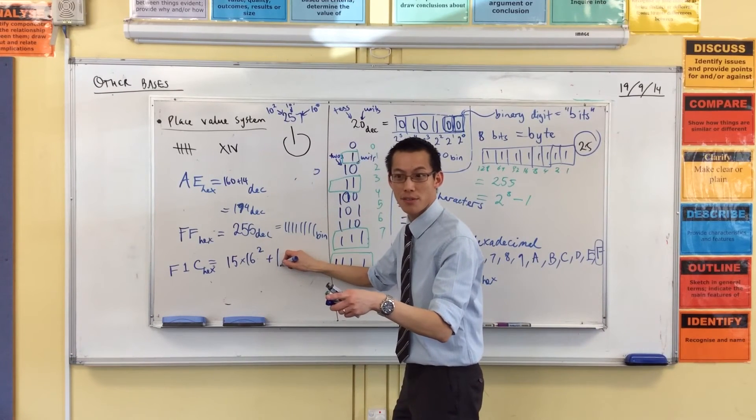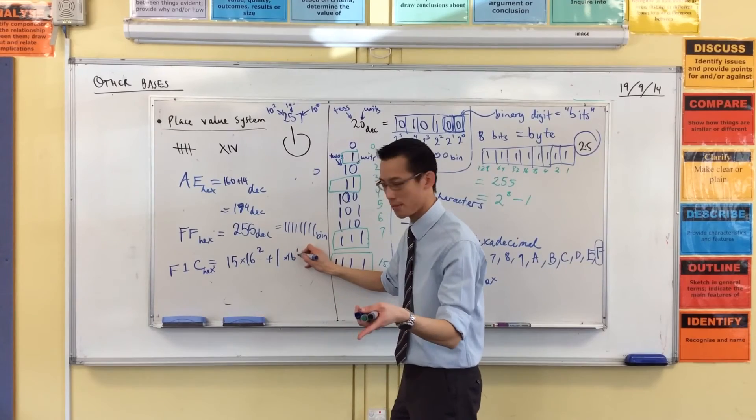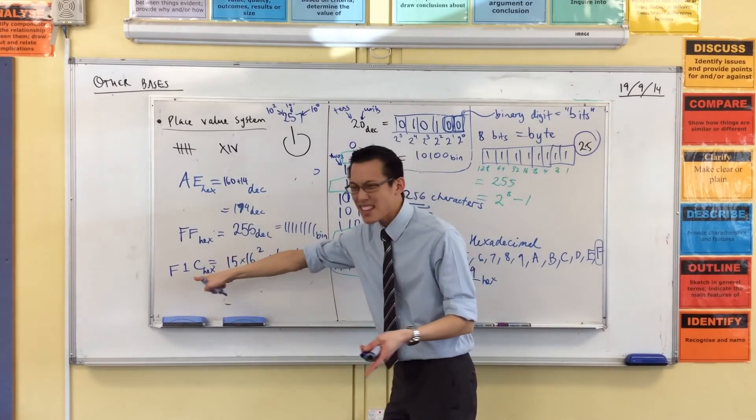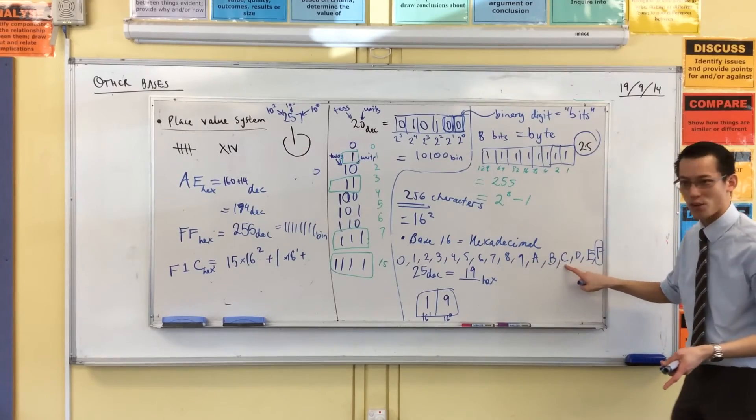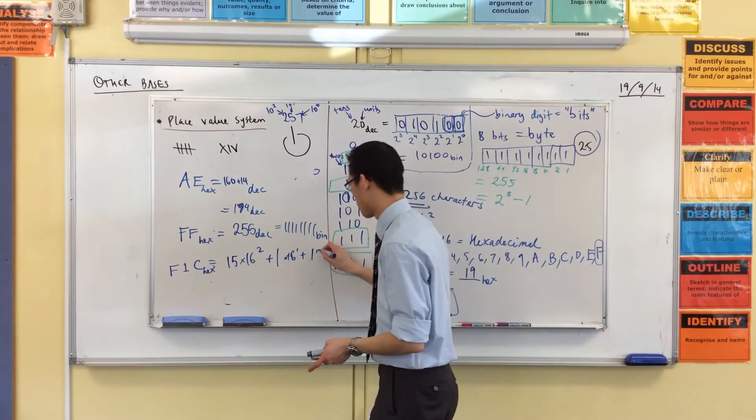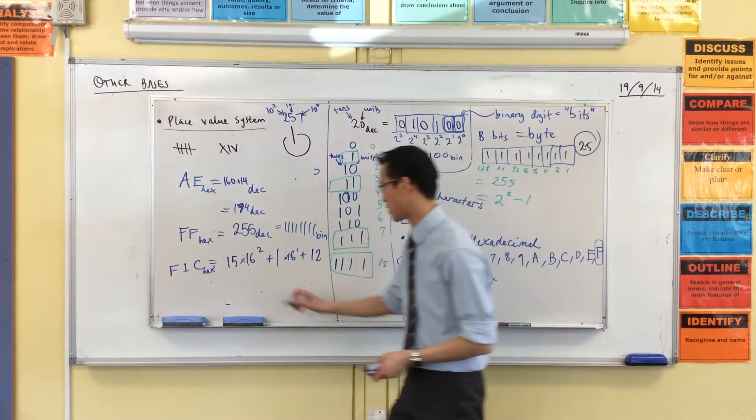Plus one lot of 16 to the power of 1, plus C lots. What's C? What's C? A, B, C. 10, 11, 12. Plus 12. I don't know what this is.